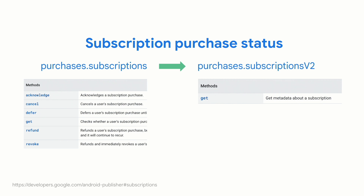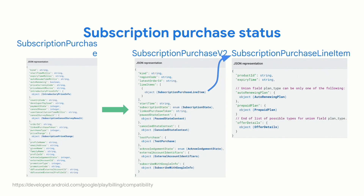This new get method returns a new set of resources with the purchase status. The old endpoint purchases.subscriptions is still there, and other lifecycle management actions such as acknowledging or canceling a subscription are still in the old endpoint. Note that the old get function only works for purchases made with older versions of the Play Billing Library — it won't be valid if you're already selling new types of subscriptions. The SubscriptionPurchaseV2 object contains information about the line items of the different products acquired, each being a SubscriptionPurchaseLineItem, from which you can obtain the base plan and offer details. To see how these entities map to the old ones, check the May 2022 New Subscription Features Guide in the developer documentation.